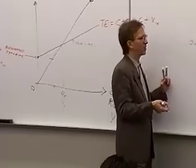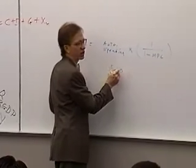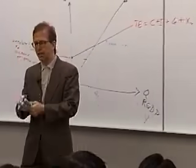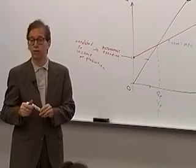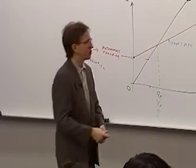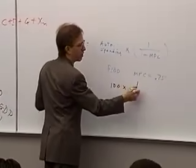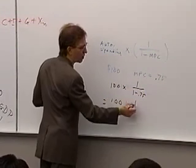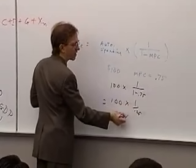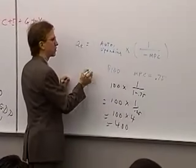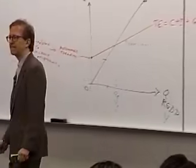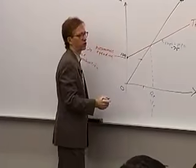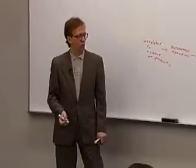On test day, I might say total autonomous spending is $100 and the MPC equals 0.75. You'd calculate: $100 times 1 over (1 minus 0.75) equals $100 times 1 over 0.25 equals $100 times 4 equals $400. So QE equals $400. If we know the autonomous spending and the slope is 0.75, equilibrium income is $400.